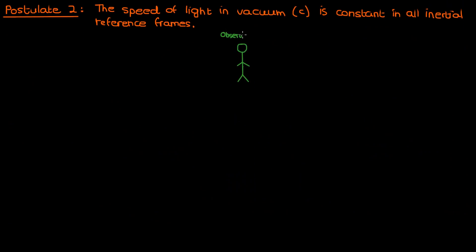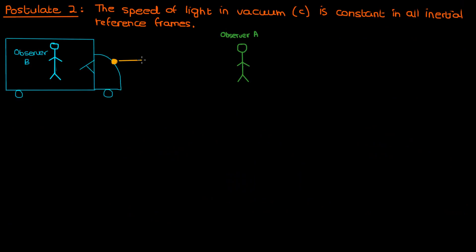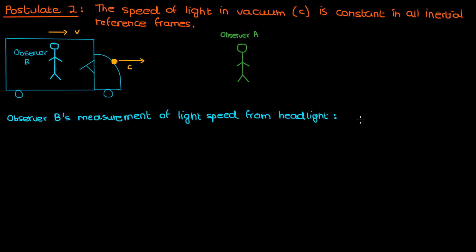Suppose observer A is once again on the ground and stationary relative to the ground. Meanwhile observer B is traveling inside a car moving at a velocity V towards observer A, and that car is also shining its headlight. Observer B is in his own inertial reference frame R_B, so according to postulate 2, the light from the headlight is moving at the speed of light C relative to observer B.